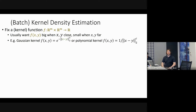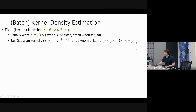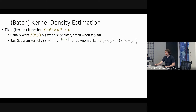We usually want to think of a kernel function so that when x and y are close, f(x,y) is big, and when x and y are far, f(x,y) is small. Some of the most common examples are the Gaussian kernel, like e to the minus the squared distance between x and y, or a polynomial kernel. You can think throughout this talk of just fixing the Gaussian kernel.